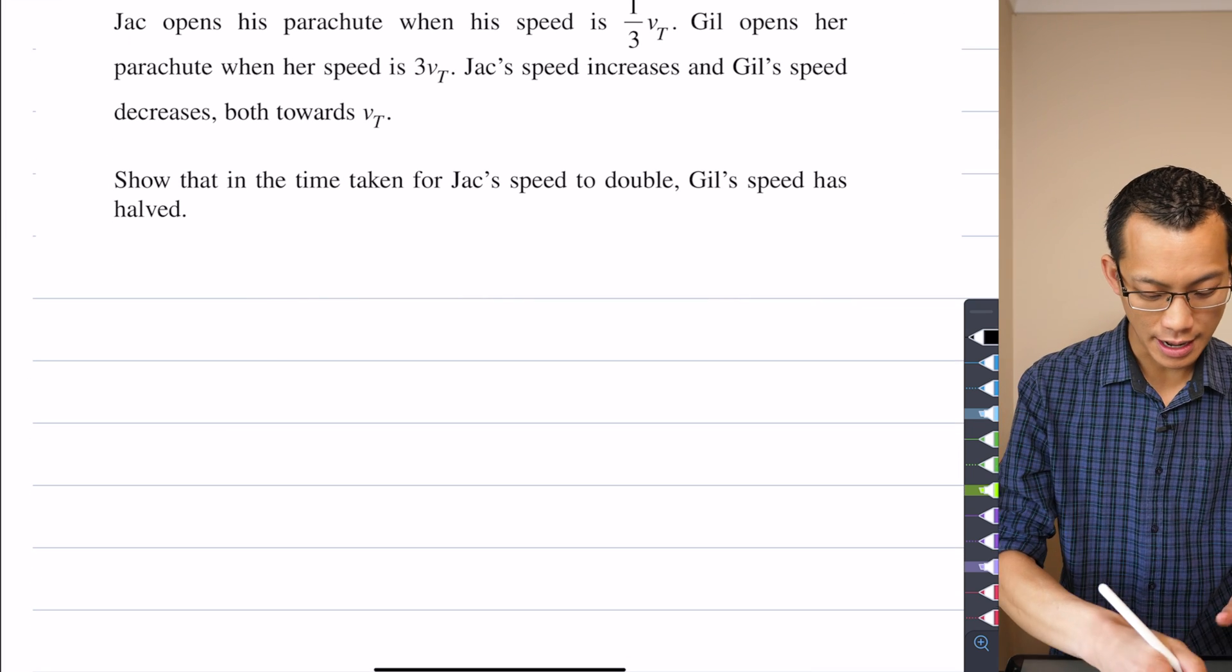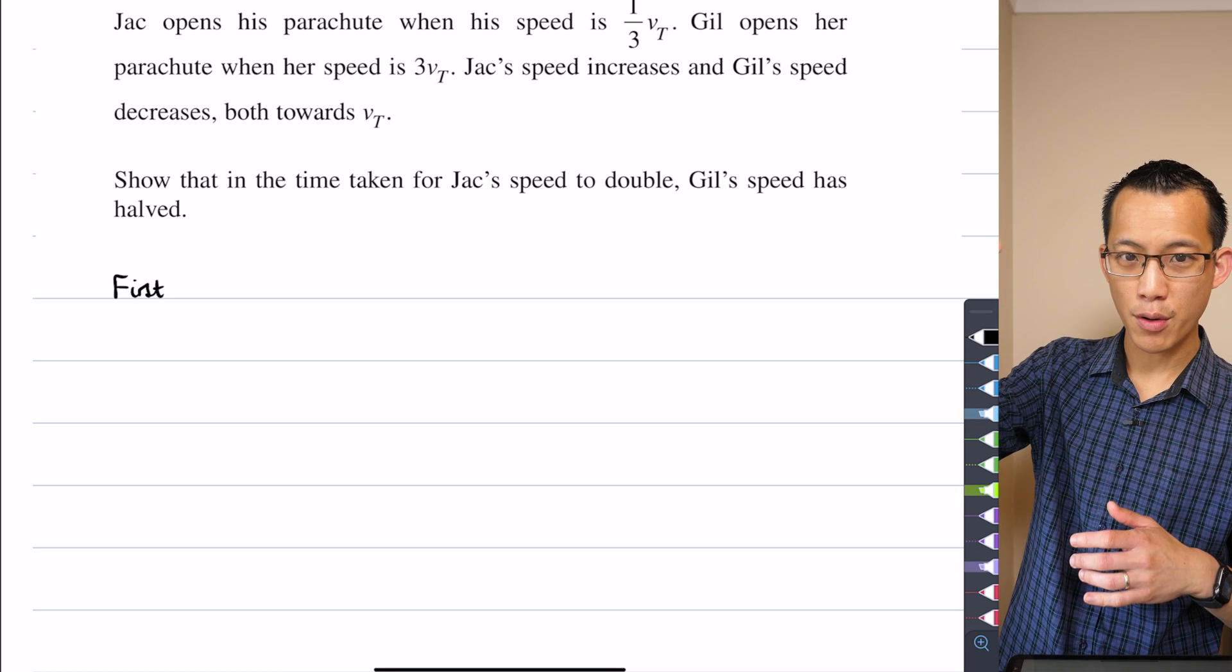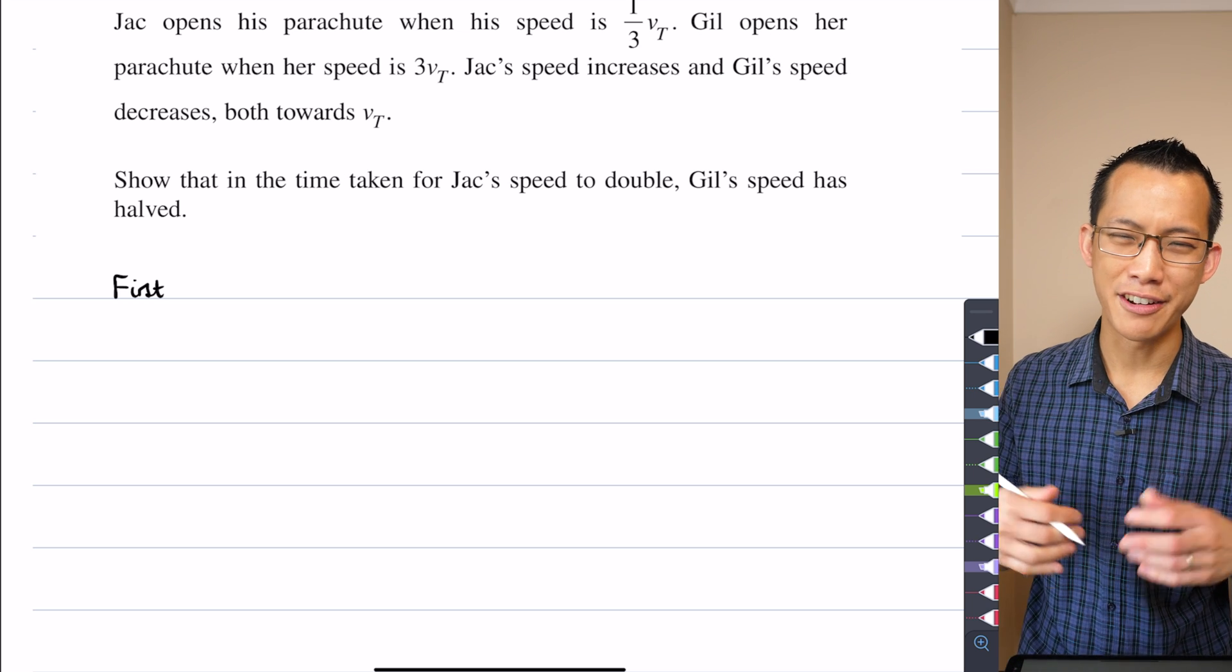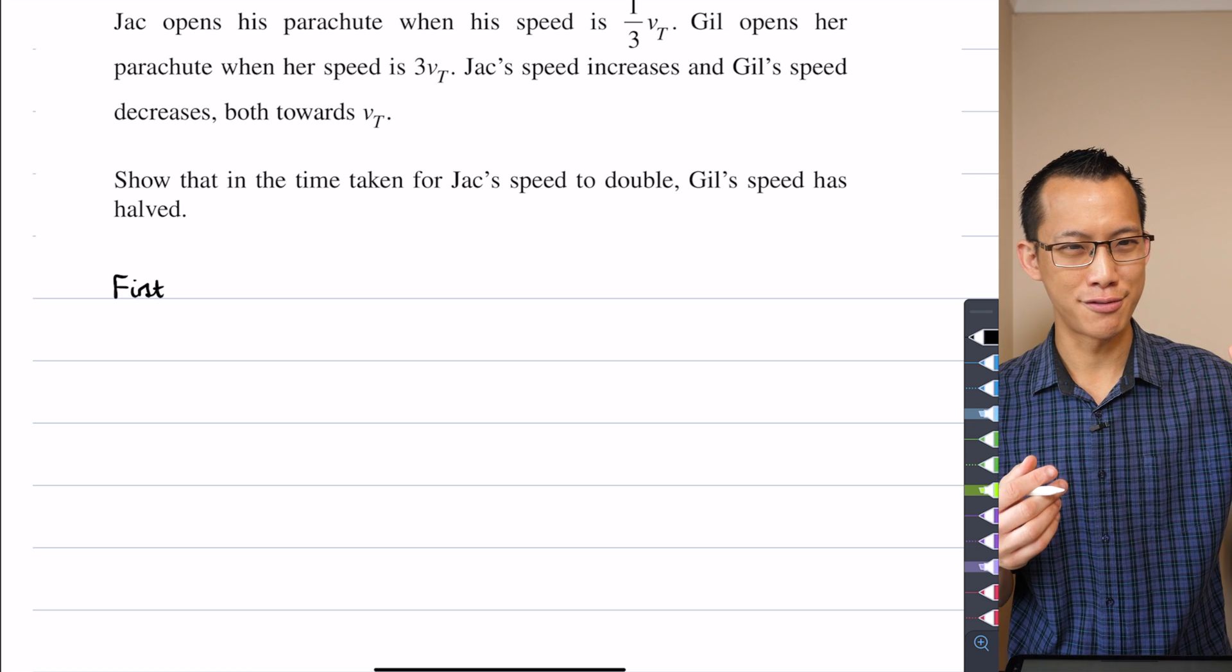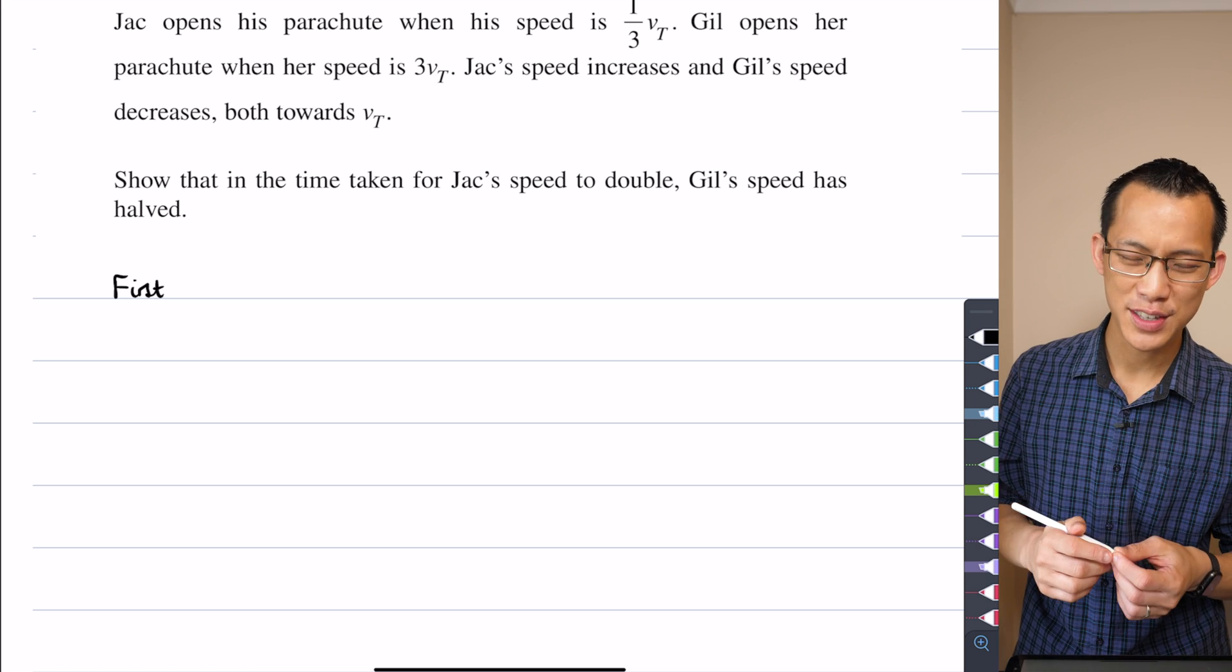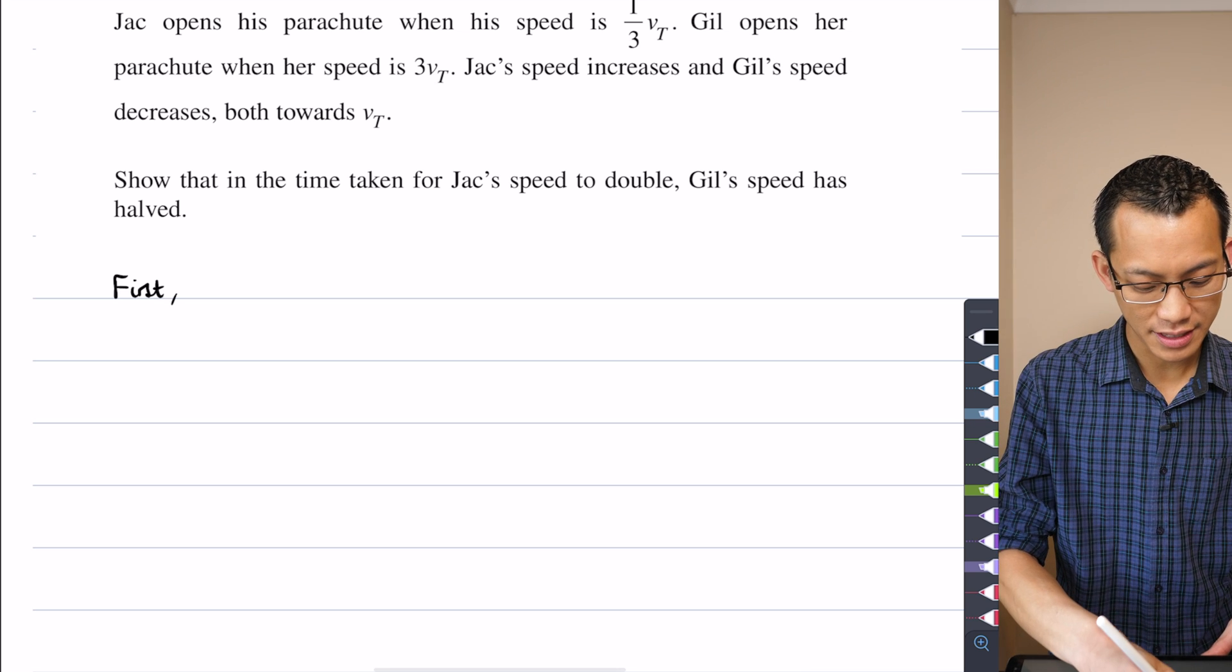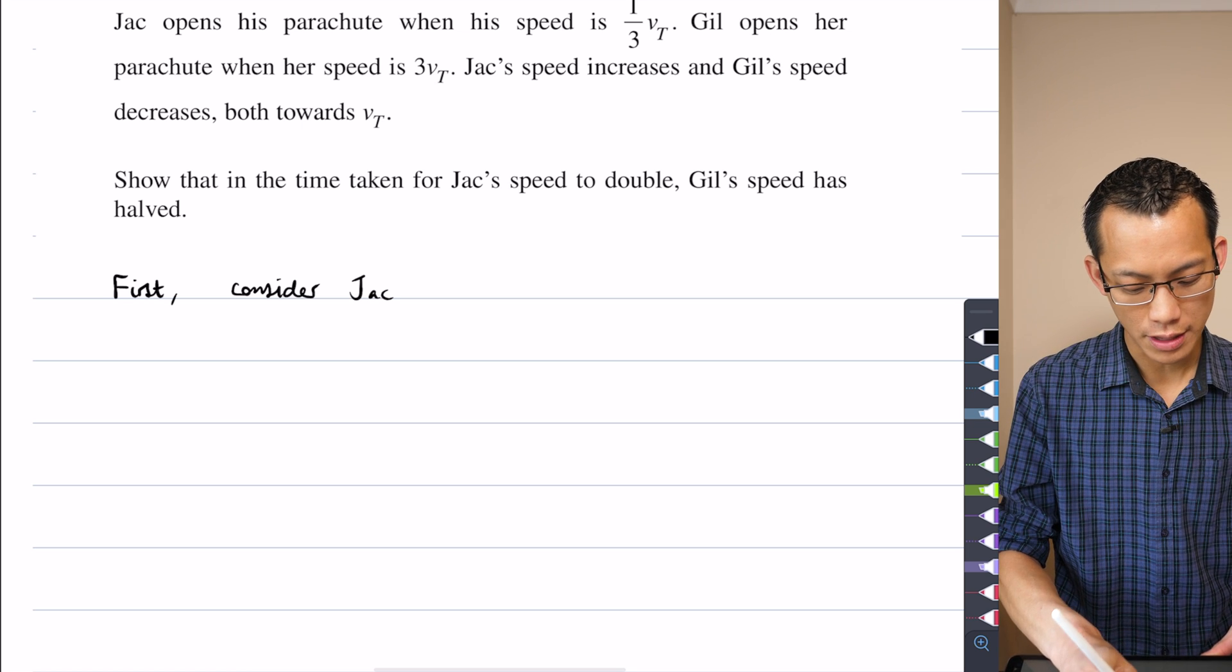So first, and I literally write this, because I need to distinguish in my working, I'm gonna have a V0 for Jack and a V0 for Jill. I suppose I could call them like V0G and V0J, but that's even more confusing because I've already got G for gravity, so I'm just gonna use words to say first let's consider Jack's situation because we began this question with him.